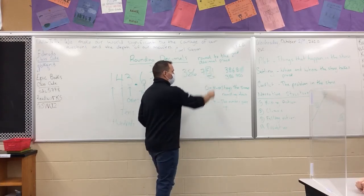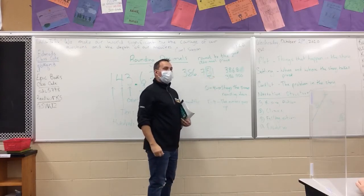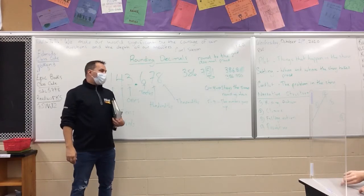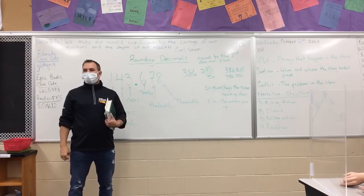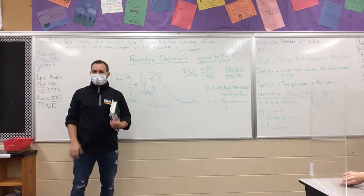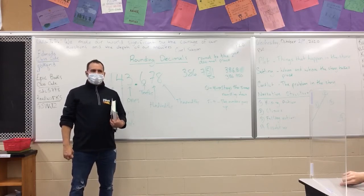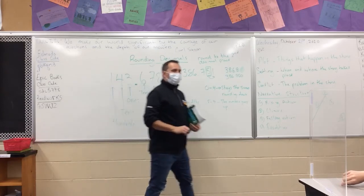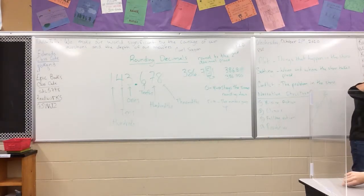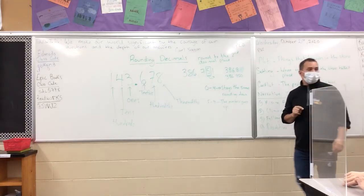In this case, the number beside it would be zero, because we know that zeros can continue to go forever. They're always just holding the place of a number. Does anyone have any questions around rounding? Remember, wherever it's asking you to round, you can circle that number. If it says the nearest tenth, circle the tenth and look at the number beside it.